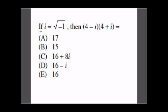The question is: if i is equal to √-1 then (4 - i)(4 + i) is equal to? This we have to find. The answer is very simple when we do the multiplication.